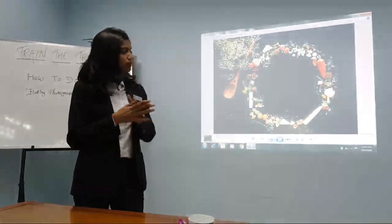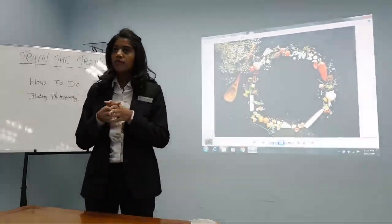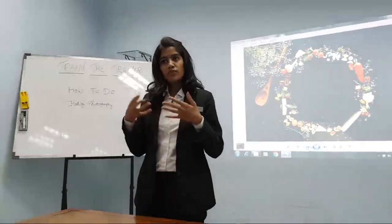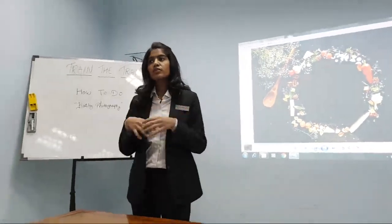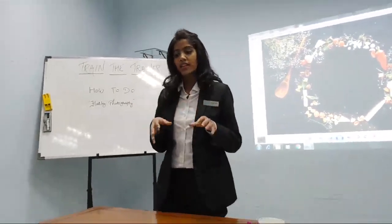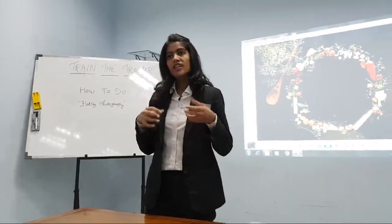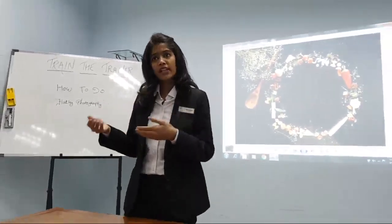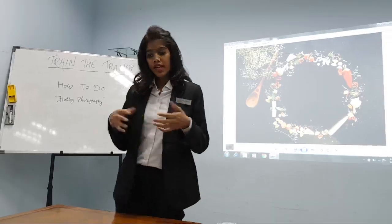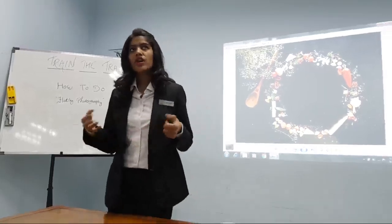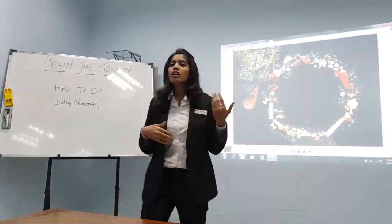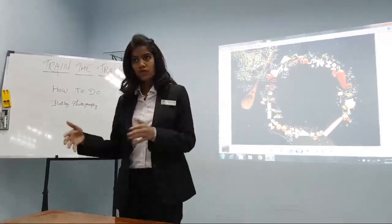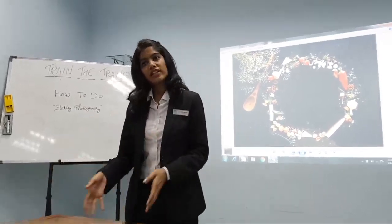For example, it could be a rustic theme, it could be a vintage or a modern theme. After choosing the theme, you need to get materials according to that theme. If I am choosing a vintage theme, then I will get some old materials like cutlery and crockery which relate to the old era. This is how I choose my materials according to my theme.